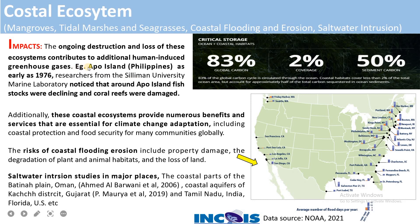On Apo Island, in 1976, a researcher from Silliman University Marine Laboratory noticed that fish stocks had declined and coral reefs were damaged. This illustrates how coastal ecosystems are being damaged because of human activities and global climate change.